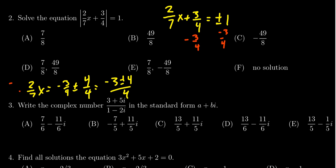To solve for x, we multiply both sides by 7/2, the reciprocal of the coefficient there. So we do that on the other side as well. And so we end up with seven times negative three plus or minus four, all over four times two, which is eight.